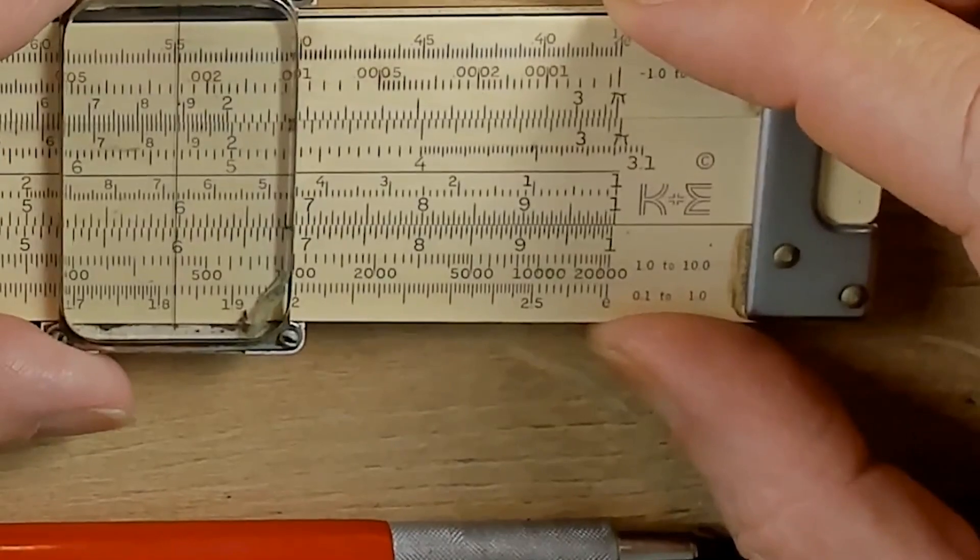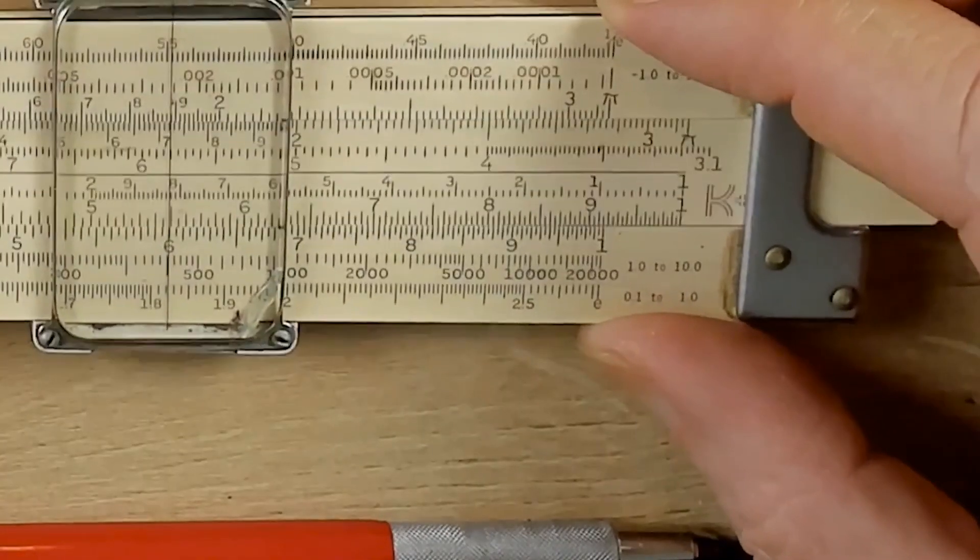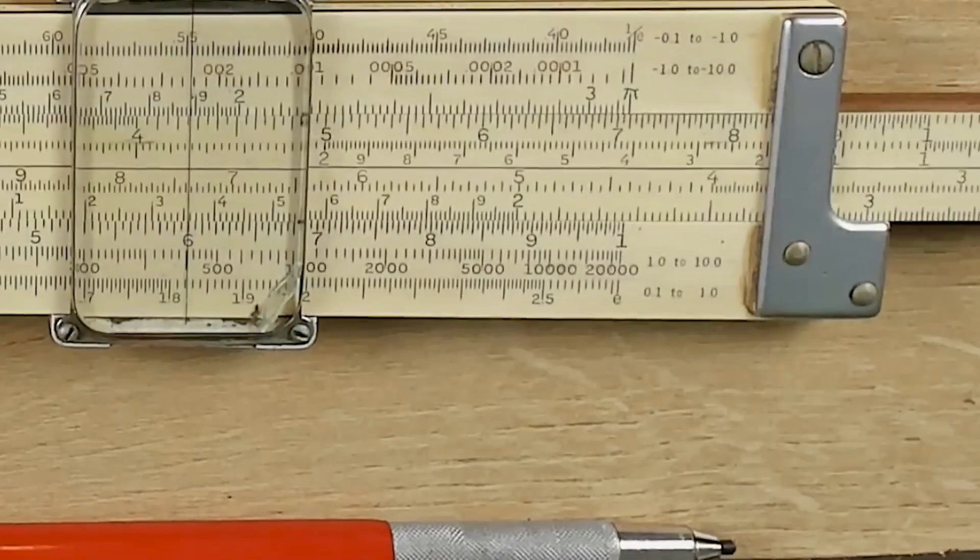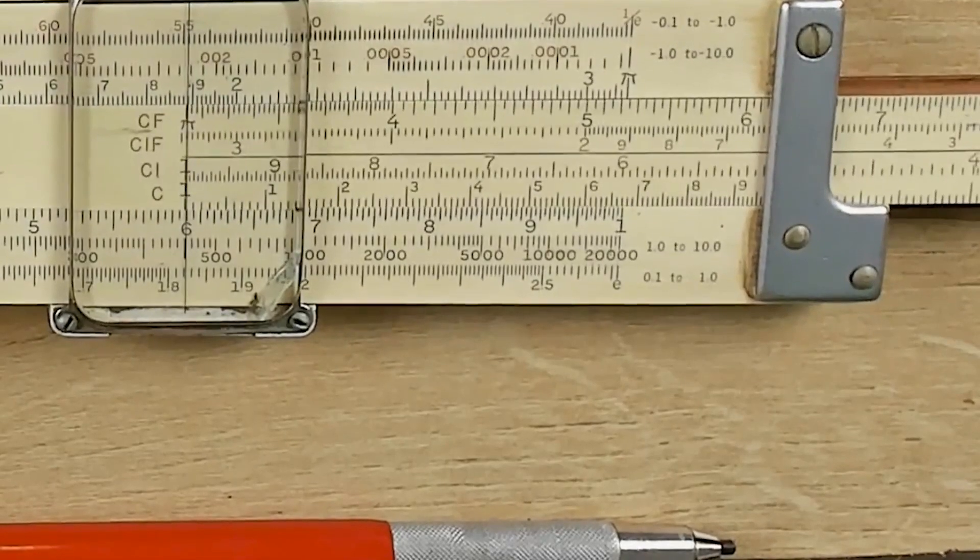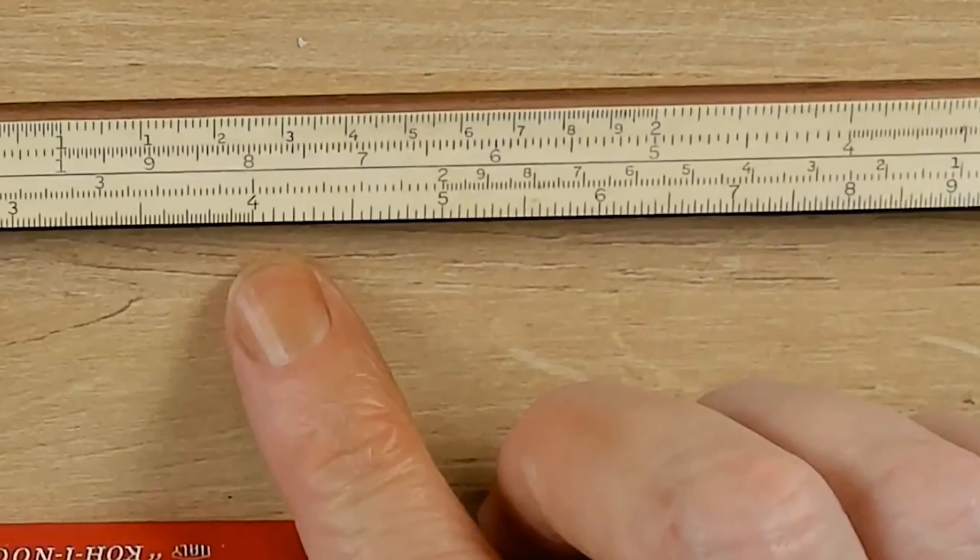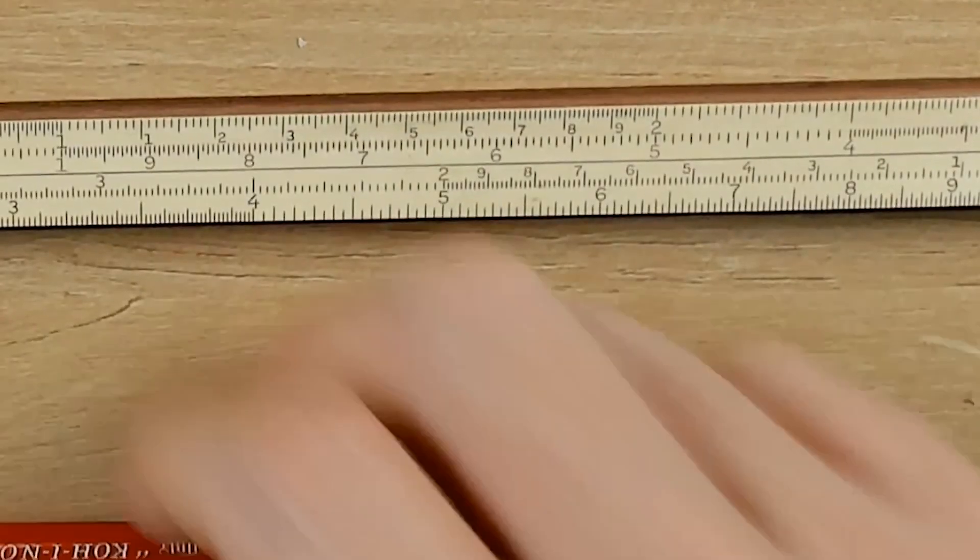So, if we come out here to 6, and multiply in the standard fashion, putting the index over the 6, and then measuring out to the 4, as you see, we're off the slide here.